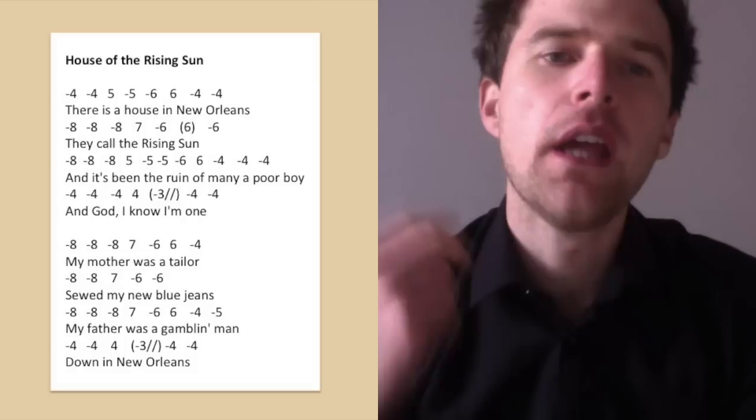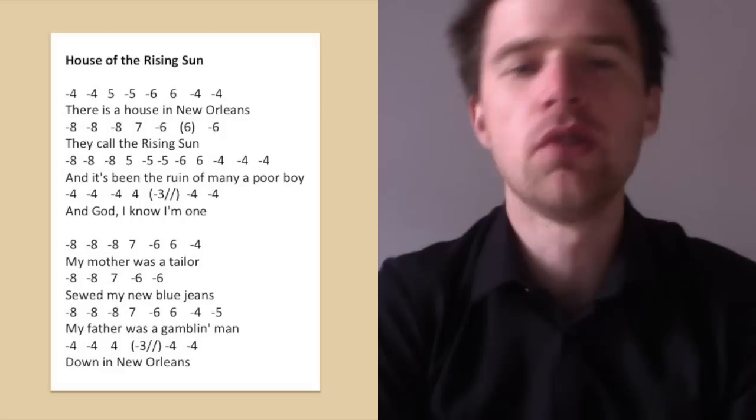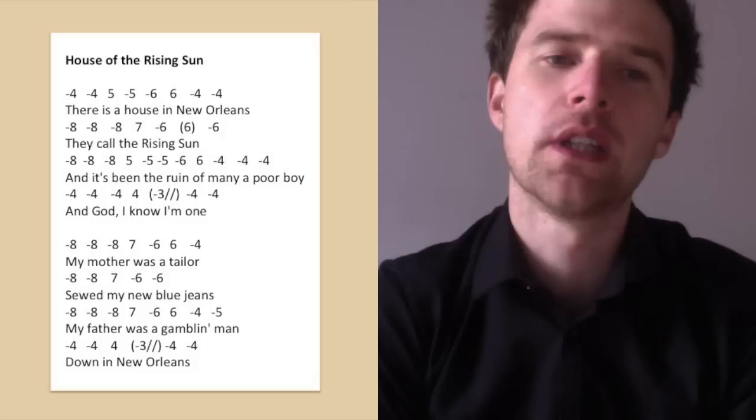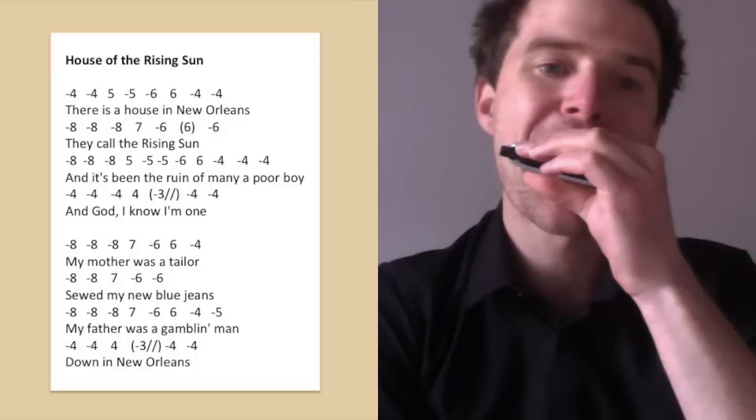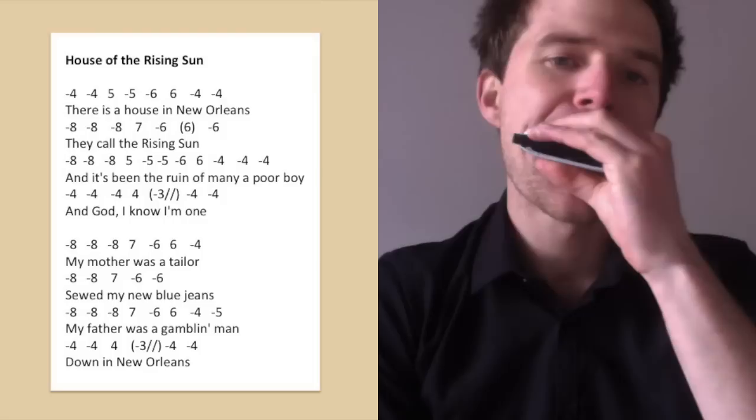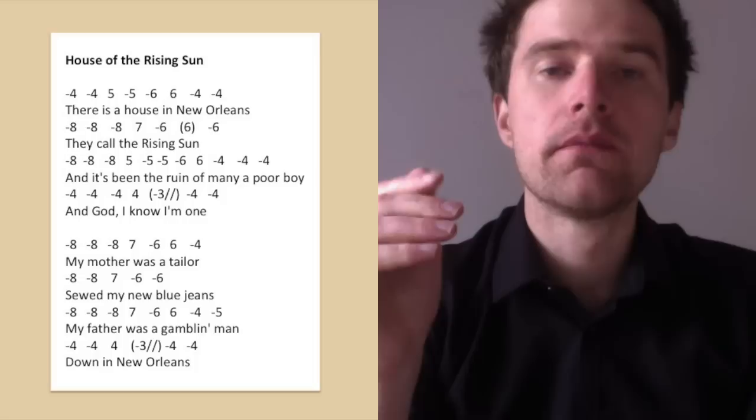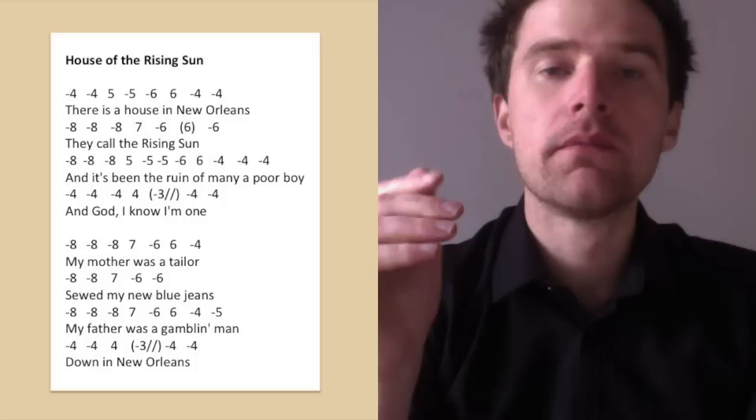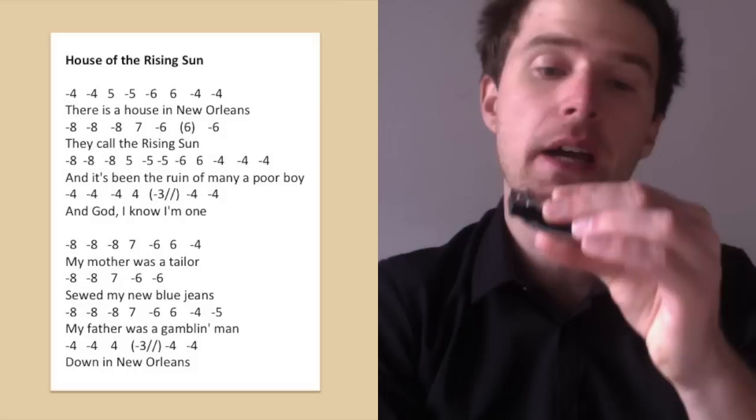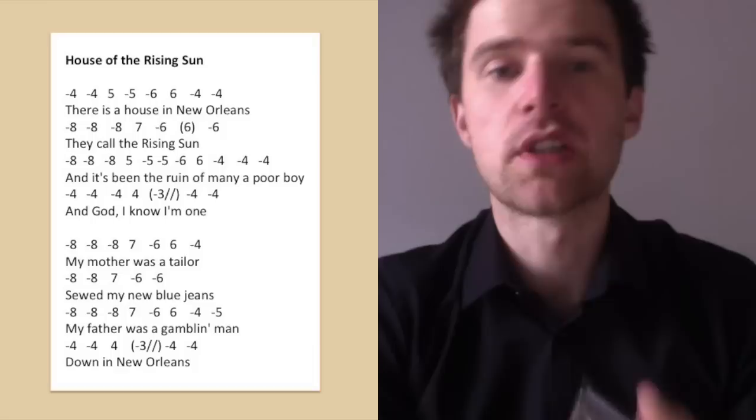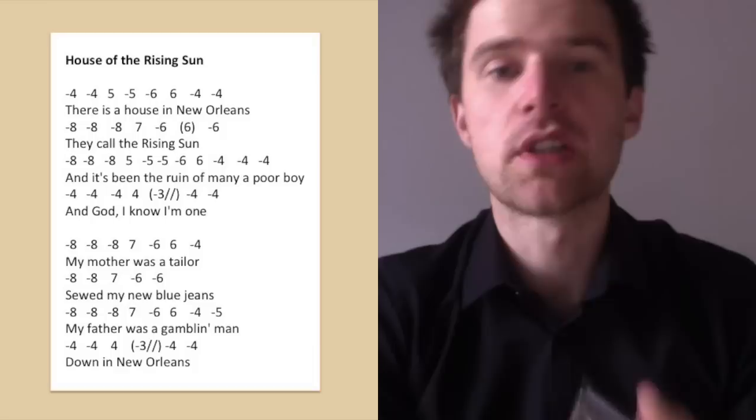So next line: eight draw, eight draw, eight draw, seven blow, six draw and then six draw again. There is a six blow which is a possible note. You can choose whether to play it or not between those two six draws, which is why it's in brackets on the screen. So that's 'they call a rising sun.' If you add in this six blow, it sounds like this. They call a rising sun. It kind of bends down. You could actually also, if you've got the bending technique on that six draw, you could just bend that note, which sounds nice and bluesy. That's an option as well.